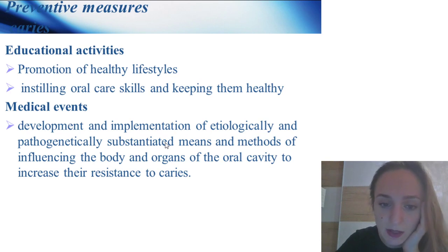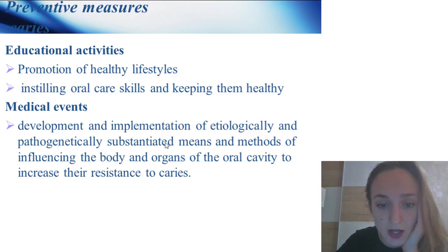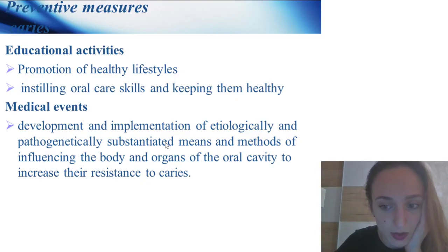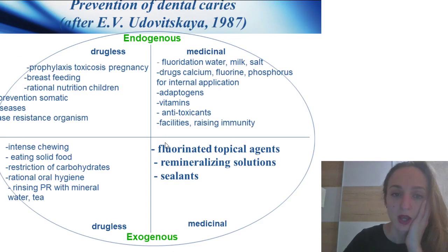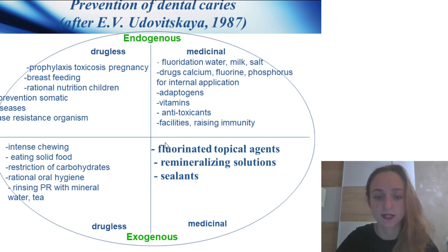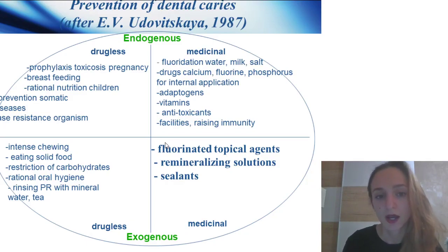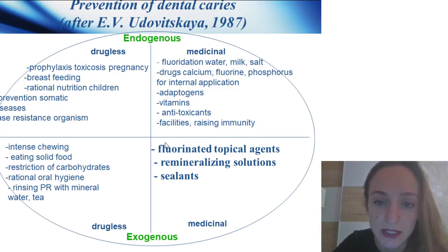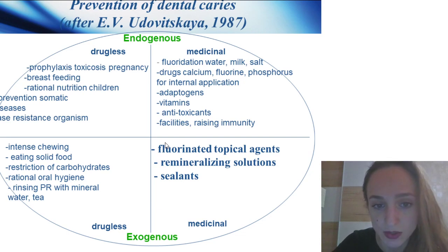Medical events involve development and implementation of etiologically and pathogenetically substantiated methods of influencing the body. Types of prevention: you should know about endogenous and exogenous. Endogenous includes medication and drug-free approaches: preventive management of toxicosis of pregnancy, breastfeeding, rational nutrition, children's prevention of somatic diseases — creating resistance of the organism.